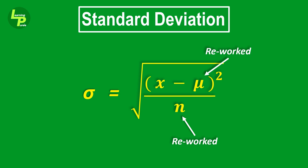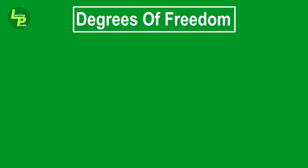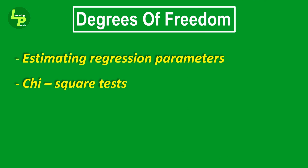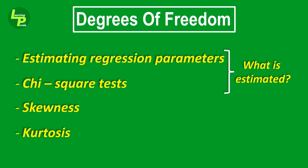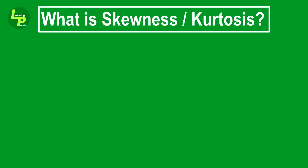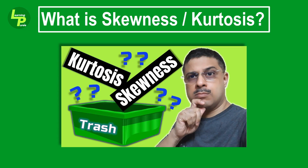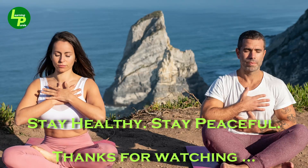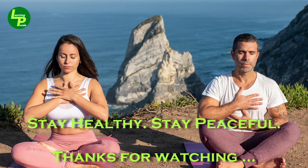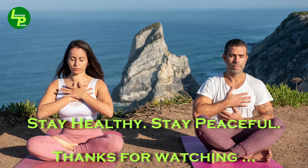Conceptually, degrees of freedom work in the same way when estimating regression parameters or when using chi-square tests. However, it depends on what is being estimated. Kurtosis and skewness is just one more place where the concept of degrees of freedom is used — watch the linked video to know more on kurtosis and skewness. Till we meet again, stay healthy and stay peaceful. Thanks for watching.